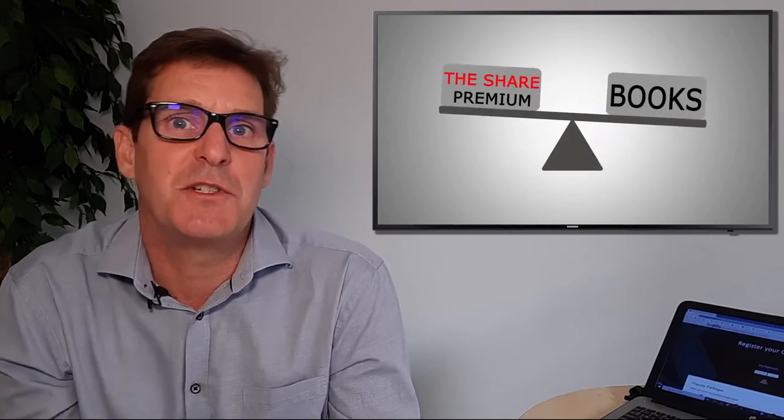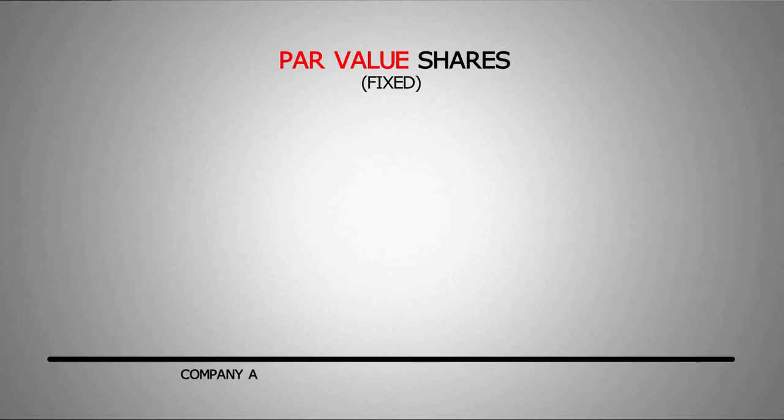The share premium is used to balance the company books. Let's look at an example: Company A has set the par value share price for a single share low at 1 rand, while Company B has set it high at 40 rand for a single share. Now let's assume that the actual value of a share of the company is trading at around 20 rand a share.